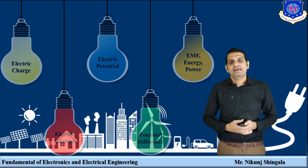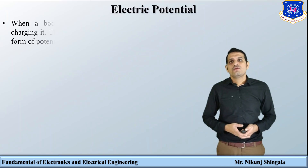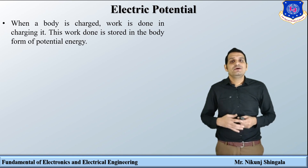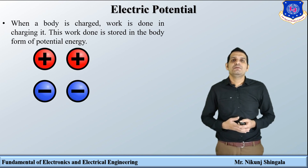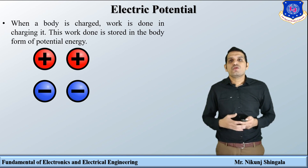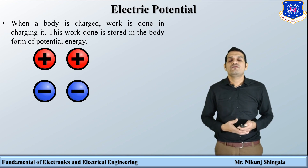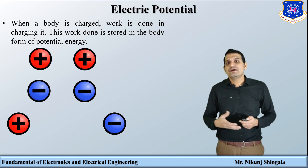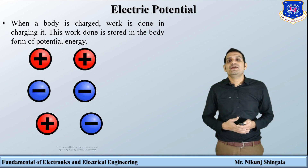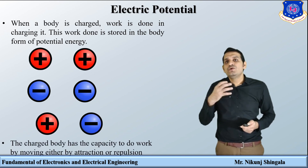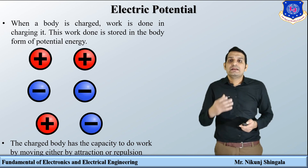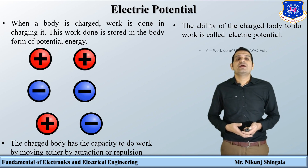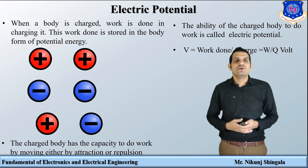Moving towards the next concept: electric potential. When a body is charged, work is done in charging it. This work done is stored in the body in the form of potential energy, and that potential energy is nothing but electric potential. If two similar charges are brought nearer, there is a force of repulsion — you can see both are moving away from each other. If two dissimilar charges are brought nearer, there is a force of attraction. The charged body has a tendency to do work by moving, either by attraction or by repulsion, and the ability of a charged body to do work is called electric potential.